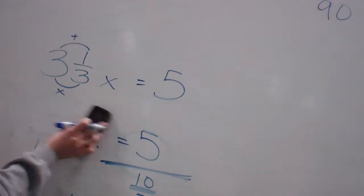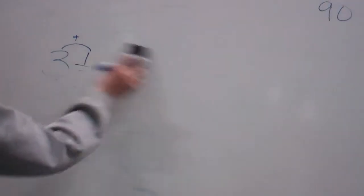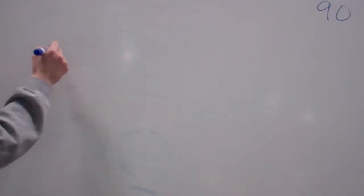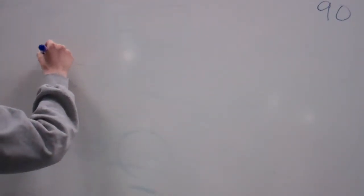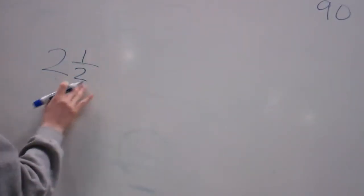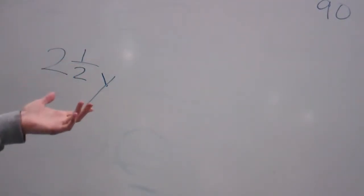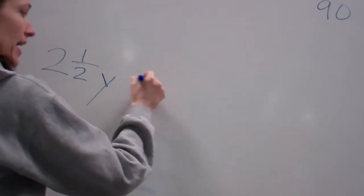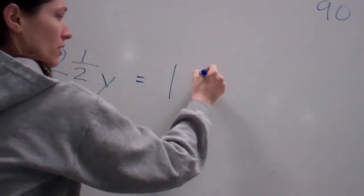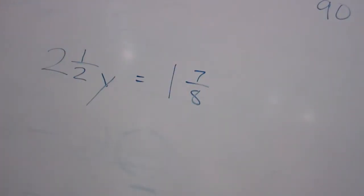I want y'all to do this one on your paper and then I'll check it. This one is going to have two mixed numbers, and it's going to be a y — but it means no different than an x. Work that problem: 2 and 1 half y equals 1 and 7 eighths.